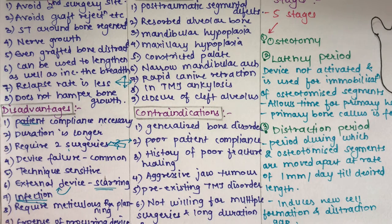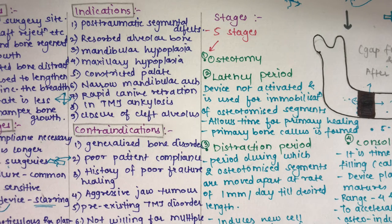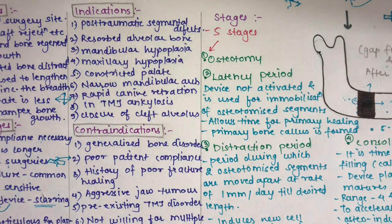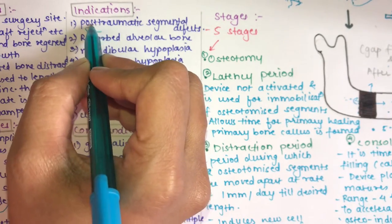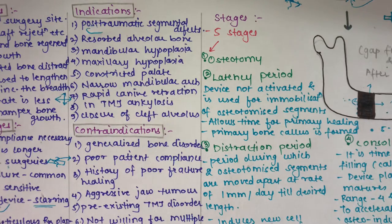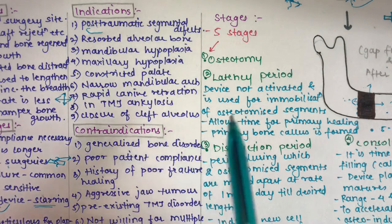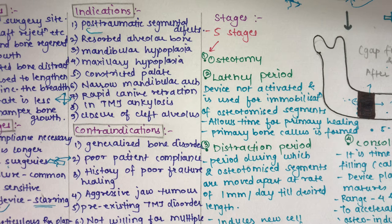The indications of distraction osteogenesis include: reconstruction of post-traumatic or post-resection segmental defects — for example, after tumor removal where bone is also lost; and reconstruction of resorbed alveolar bone when the alveolar bone has resorbed.